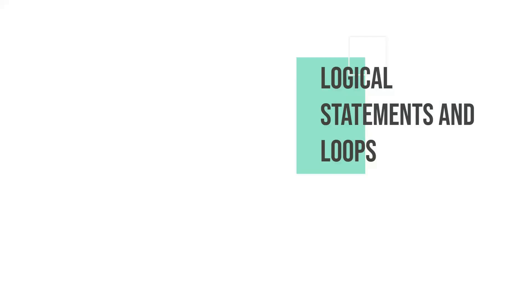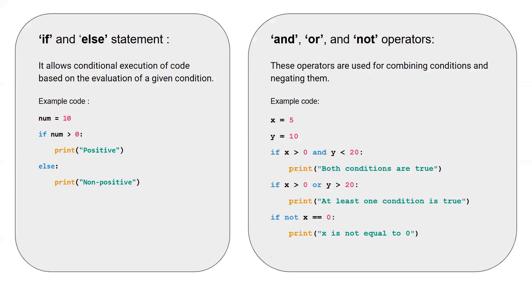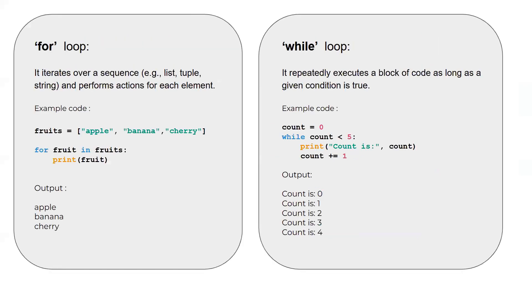Coming to logical statements and loops. A logical statement is the if and else statement, where based on a particular condition, the program will execute the appropriate block of code. And in order to write these conditions, you use logical operators like and, or, and not, which is why this is called a logical conditional statement. Coming to loops, if you have a block of code that you want to repeatedly execute, instead of writing them again and again, using a loop makes it more efficient. So if you want to iterate over a sequence like list, tuple or string, you can use a for loop.